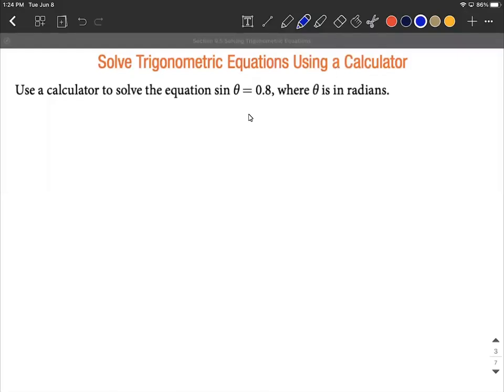Trying to solve trigonometric equations, this time using our calculator, and we want our solutions theta to be in radians. So pretty basic equation going on here. We have sine of theta equals 0.8.